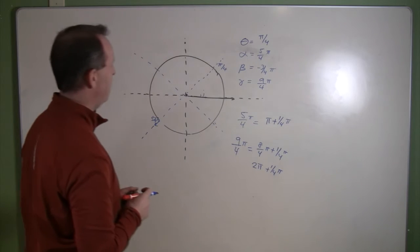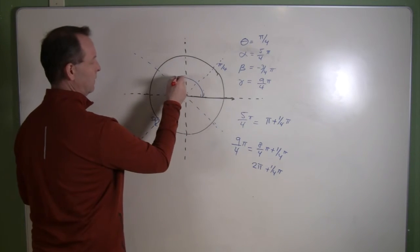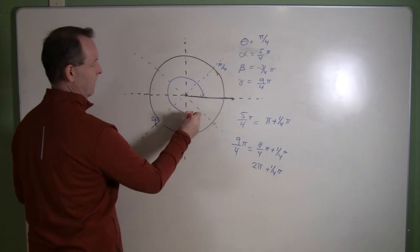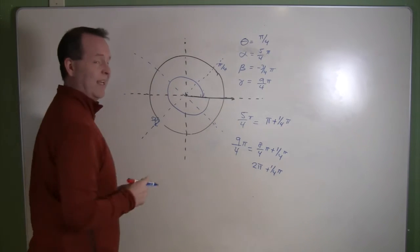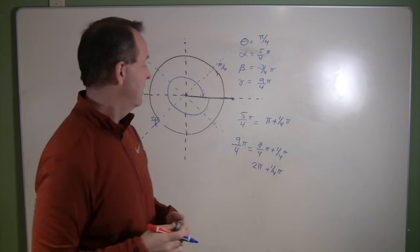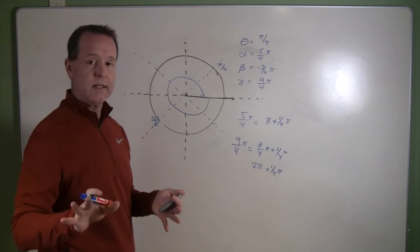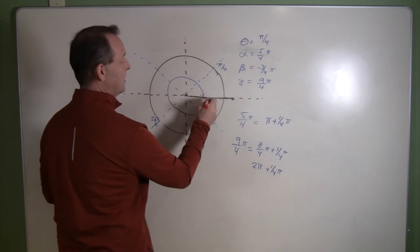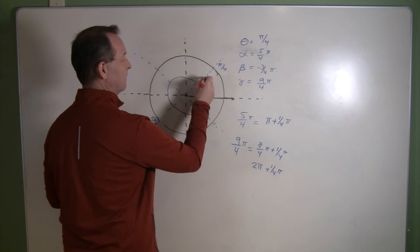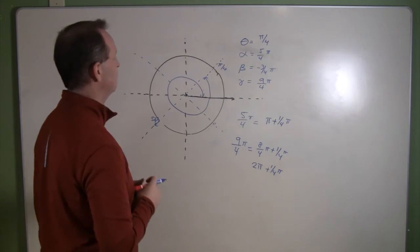How about that? So if I started traveling around the circle, I would get back to its beginning point of two pi and I still got another quarter pi to travel. Well, that's all right. We can do that. We'll just keep continuing around the circle and stop at that additional quarter pi mark.